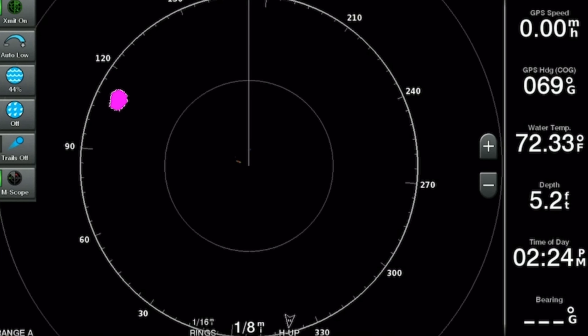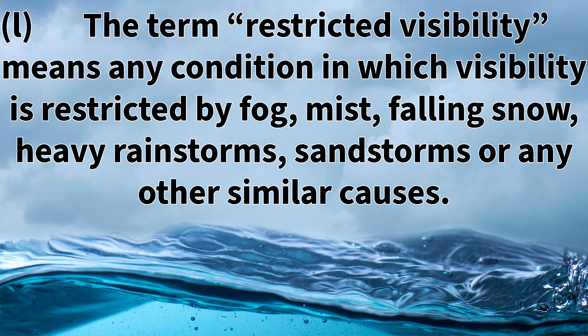Rule 3k states that vessels should be deemed to be in sight of one another when they can be observed visually from each other. You can't be 'in sight' of another vessel if you can't see it with the naked eye — the key is that you can see the vessel with the naked eye and not with the assistance of radar or electronics.